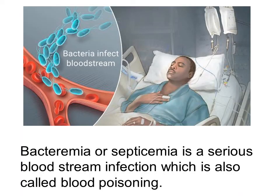Bacteremia is also referred to as septicemia. Septicemia is a serious bloodstream infection, which is also called blood poisoning. Make sure you understand that the poisoning is not due to a toxin — this blood poisoning is a reference to the bacteria that is in the blood, and the bacteria is an organism, not a toxin.